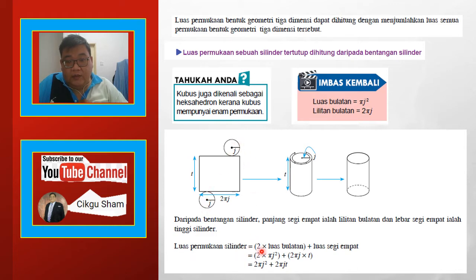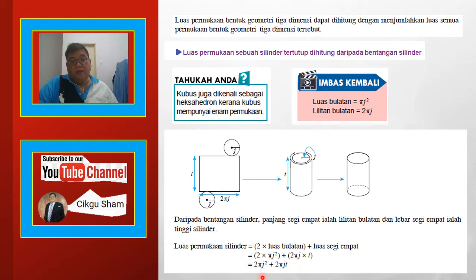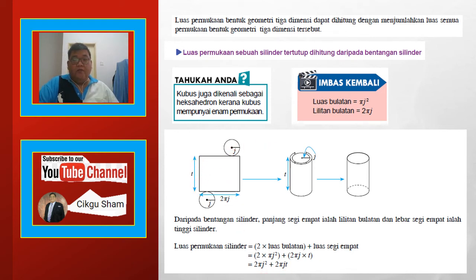Kita ada 2 bulatan, so daripada 2 bulatan tambah dengan luas segi 4. Masukkan dan inilah sebenarnya. Jadi ini kenapa kena ingat — luas permukaan selinder adalah 2πj² tambah 2πjt, di mana t adalah tinggi.